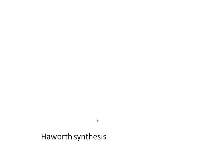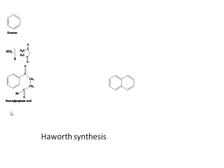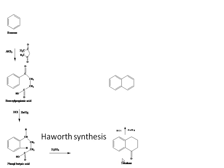We will compare Haworth synthesis for all three compounds. For naphthalene: benzene reacts with succinic anhydride to form benzoylpropionic acid; Clemmensen reduction gives phenylbutyric acid; cyclization gives tetralone; Clemmensen reduction gives tetralin; final reduction gives naphthalene. For anthracene: benzene reacts with phthalic anhydride instead of succinic anhydride to give benzoylbenzoic acid via Friedel-Crafts acylation.